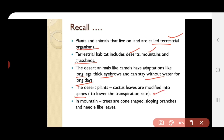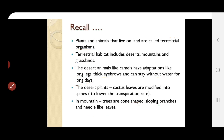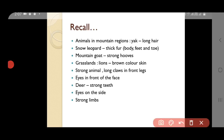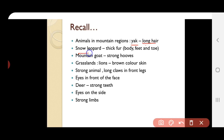In mountain regions, trees are cone-shaped with sloping branches and needle-shaped leaves, making it easy for snow to slide off. Animals in the mountain region include the yak, which has long hair, and the snow leopard, which has thick fur on its body, feet, and toes. Mountain goats have strong hooves that allow them to jump from one mountain to another.